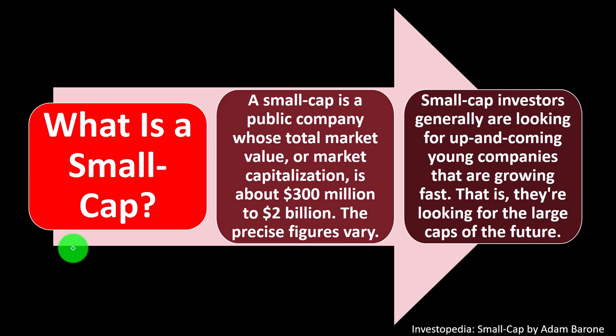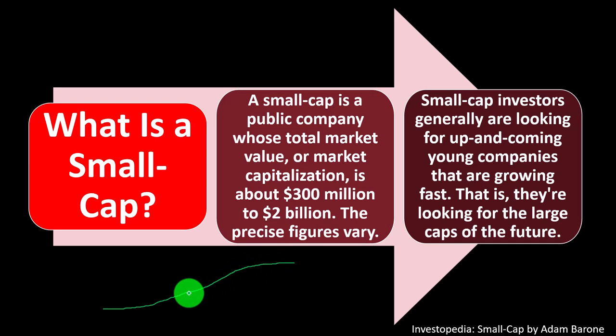Small cap investors generally are looking for up and coming young companies that are growing fast — they're looking for the large caps of the future. If we think about the business cycle of a company, we're looking for companies that are in this growth area. When we look at $300 million to $2 billion, that seems pretty big, but we're thinking about these publicly traded companies in comparison to other publicly traded companies. In relation, these are types of companies that could have the potential for growth.